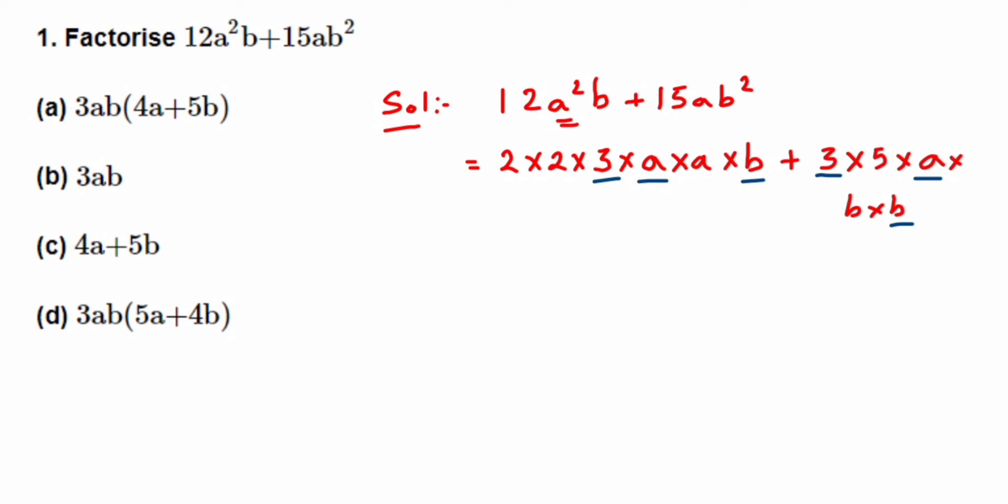So if I take the common term outside, I will get here 3, and then I have taken a and then b. And in the bracket you just write down the leftover. So here these 2s are left and a is left. So 2 × 2 is 4. I will get here 4 and this × a, so 4a plus.